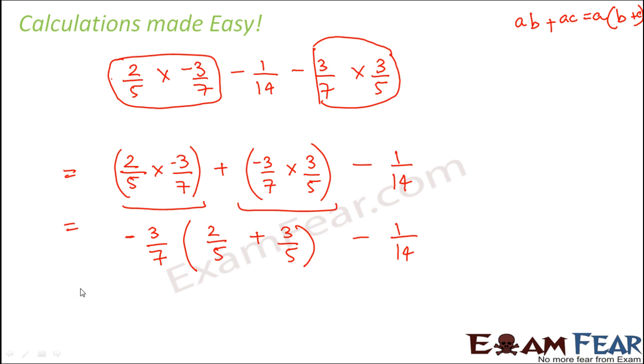So now you see here you do not have the pain to calculate the LCM. So the method of your calculation became easier. Now 3 plus 2 is 5. So this is 5 by 5 minus 1 by 14. So this 5 and 5 will cancel out. So we have minus 3 by 7 minus 1 by 14.